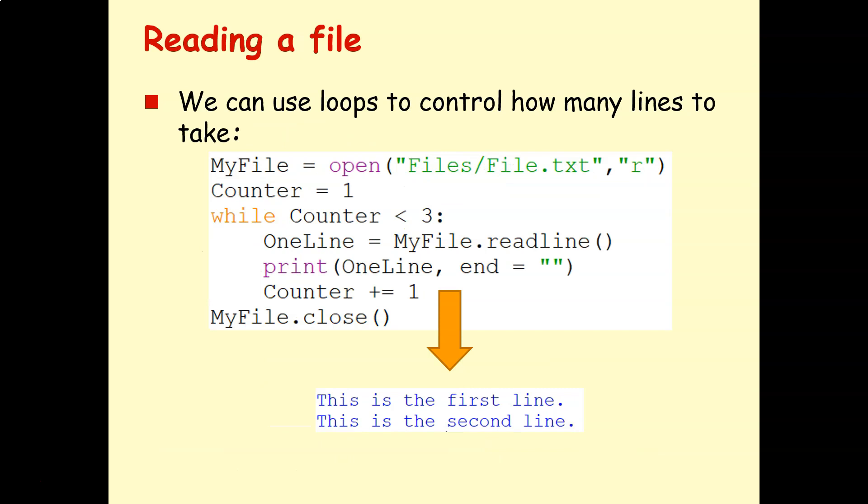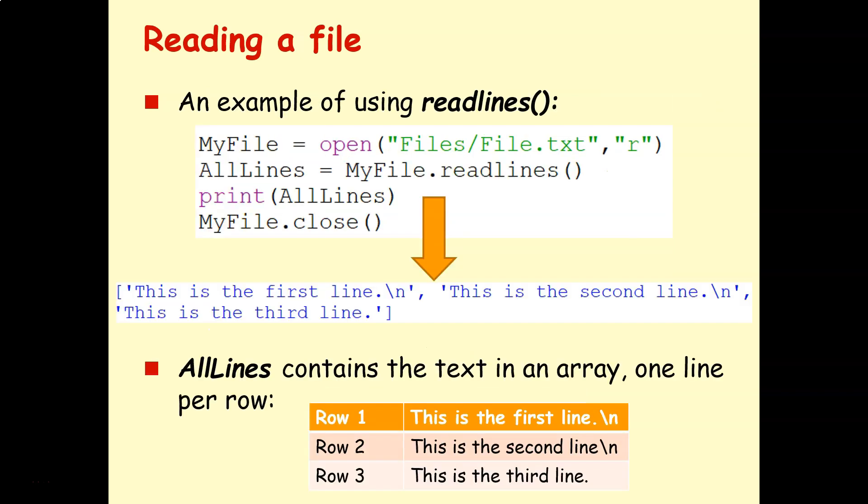We can control how many lines we take by using a simple loop. So here I open up my text file. I set the counter to one while counter less than three, e.g counter equals one counter equals two. Take in a line, print it and add one to the counter. So this will take the first two lines and display them in a loop. If I want to take more lines, I can just change this parameter here.